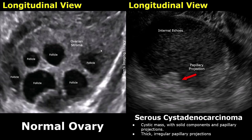These are transvaginal images. This approach provides much better details and is more accurate than a transabdominal approach. On the left is a normal ovary with anechoic follicles noted, and this is the ovarian stroma. On the right is an image showing a complex mass which was later diagnosed as serous cystadenocarcinoma. On ultrasound, ovarian serous cystadenocarcinomas typically appear as predominantly cystic masses. The cystic spaces can be unilocular or multilocular, often containing anechoic or slightly echogenic fluid due to hemorrhage or proteinaceous content. In many cases you do not find low-level internal echoes in the cystic mass, but in some cases such as this one you can see low-level internal echoes.